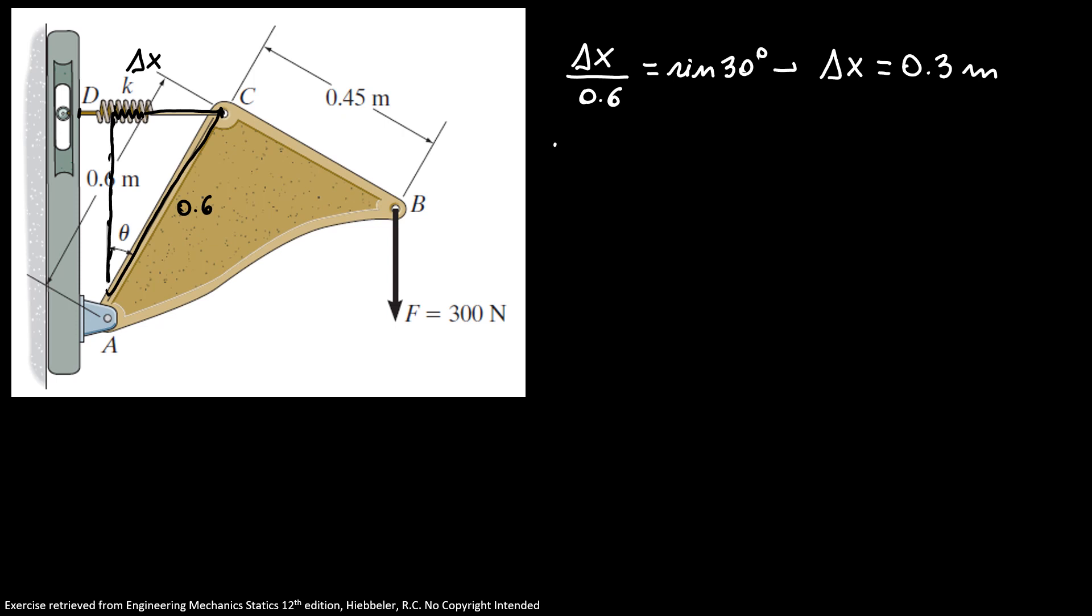Now I know that my force equals k times delta x. Here is our S. So S equals 398 equals 0.3 times k. So k equals 1327.4 newtons per meter, or k equals 1.33 kilonewtons per meter. So this is our stiffness.